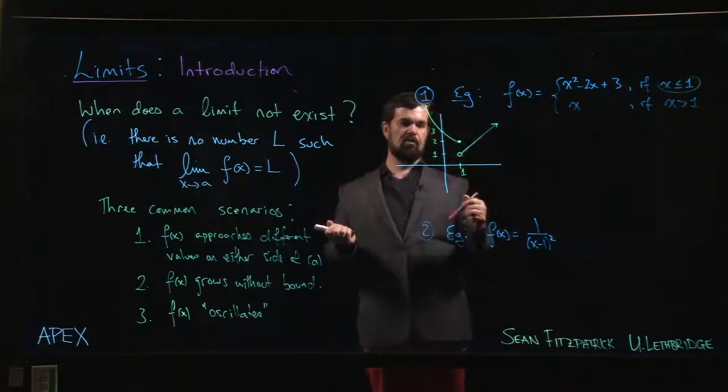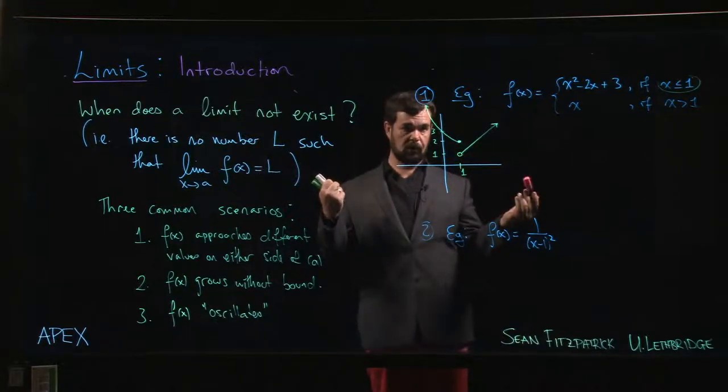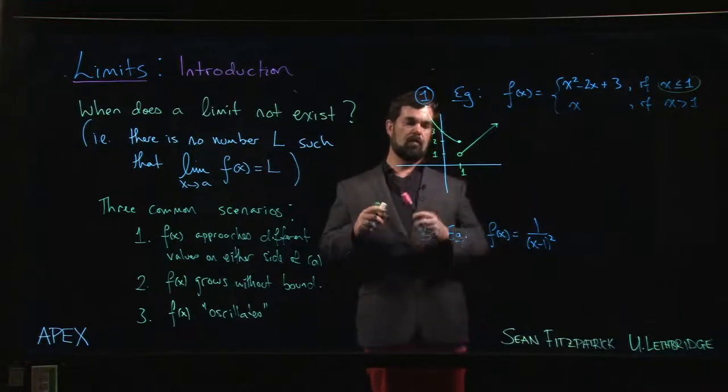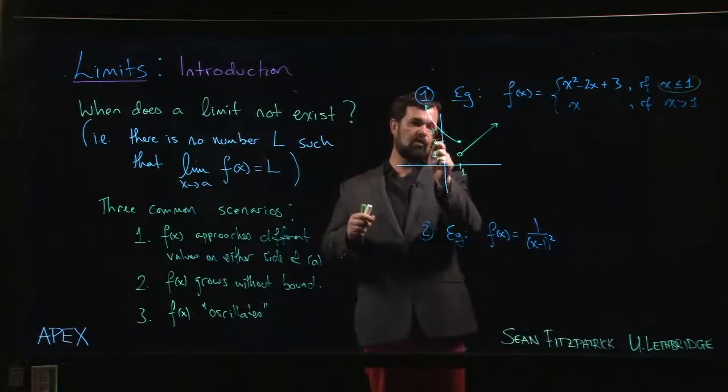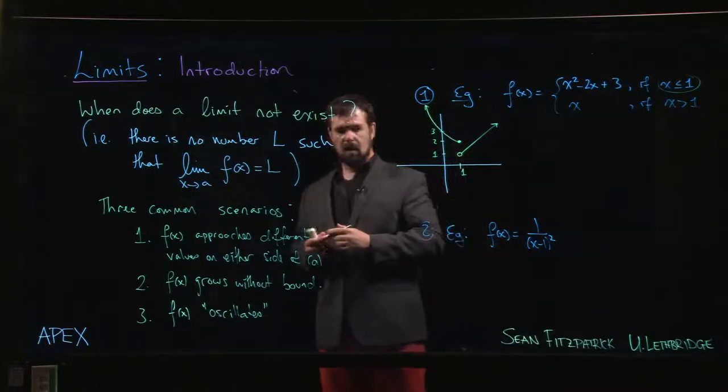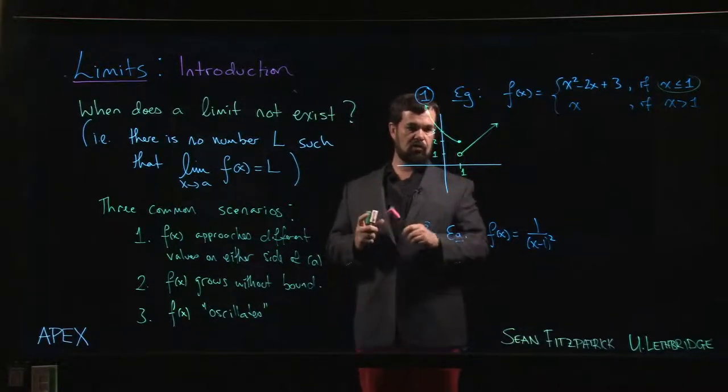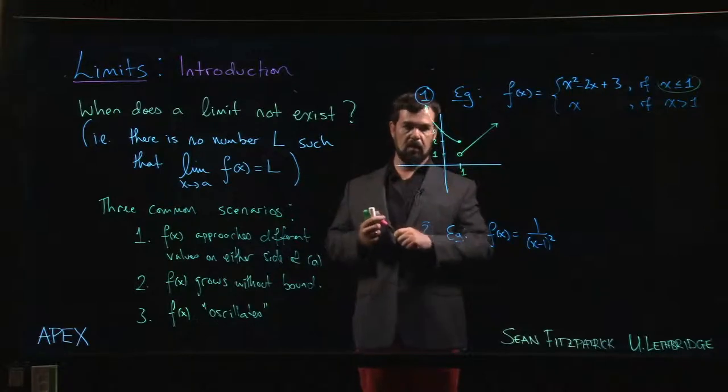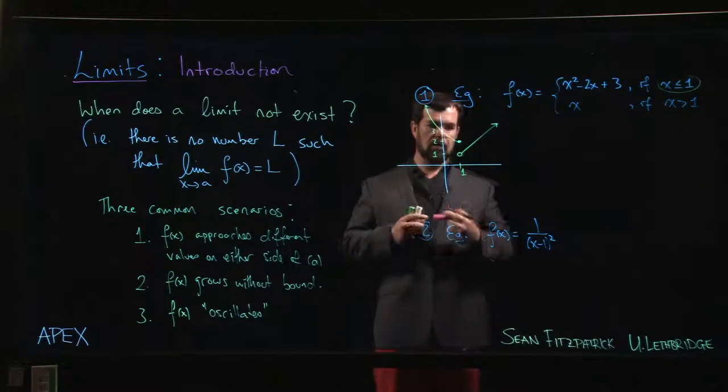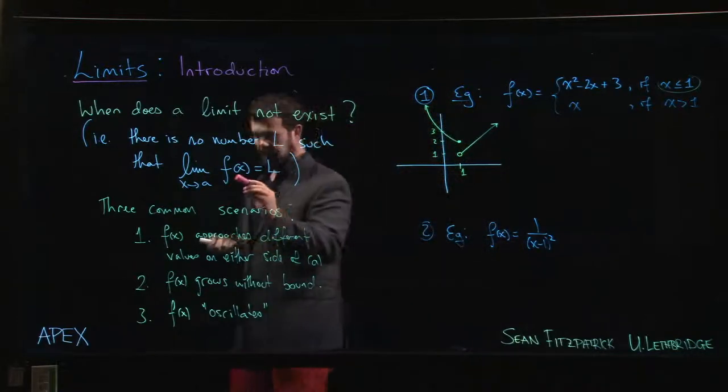We can introduce this language of one-sided limits, but right now we're just looking at this notion of well x could be a little bit less than one, could be a little bit bigger, and we have to consider both possibilities at the same time. And we can see that there's no way that you can possibly have a value L so the function is close to that value, because whatever L you pick—if you choose L to be 2 because f of x is getting really close to 2 for x values that are slightly less than 1—well then you're going to be off when you're coming in from the right. If you choose L to be 1, then you're going to be off when you come in from the left.